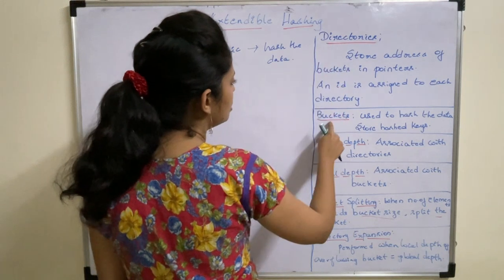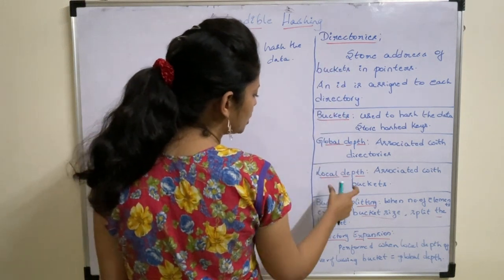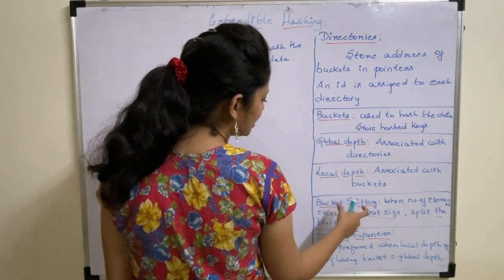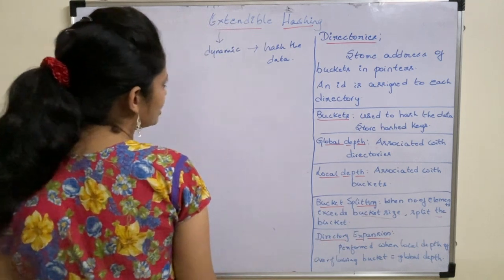The key terms used in extendable hashing are: directory, buckets, global depth, local depth, bucket splitting, and directory expansion.